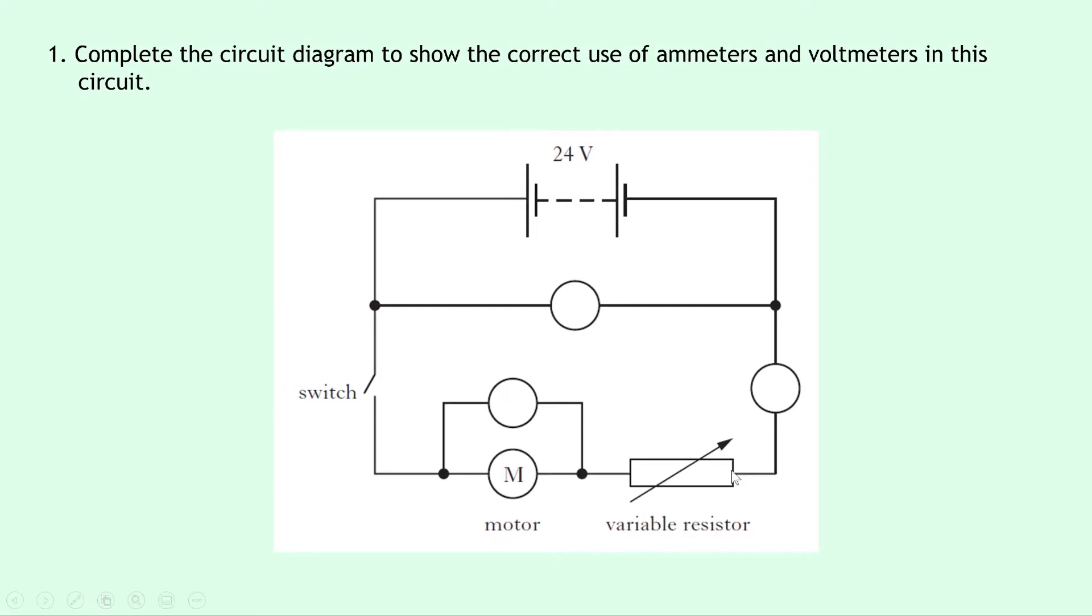Question one says to complete the circuit diagram to show the correct use of ammeters and voltmeters in this circuit. Notice we've got a 24 volt battery, a switch, a motor, variable resistor, and then three unknown components.